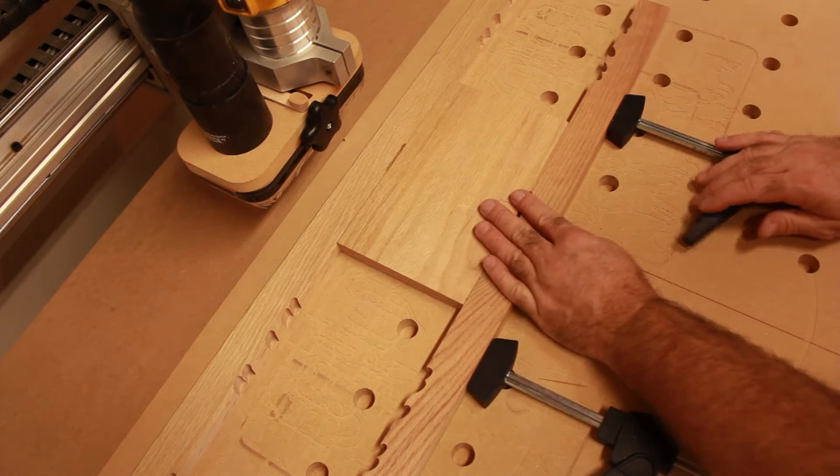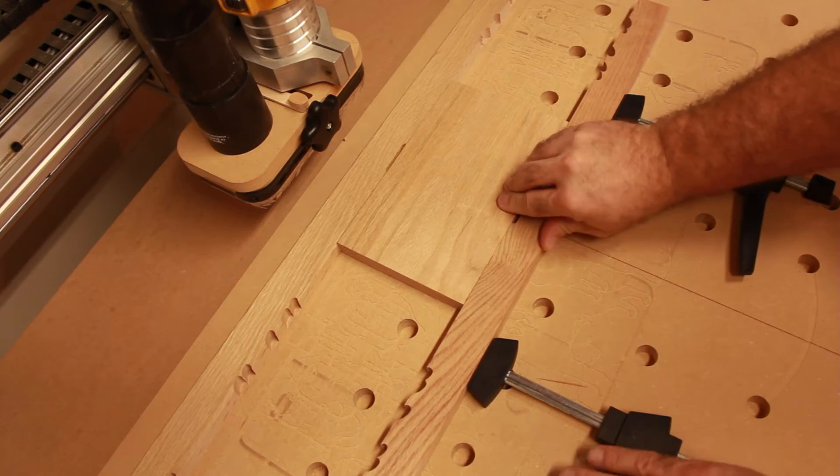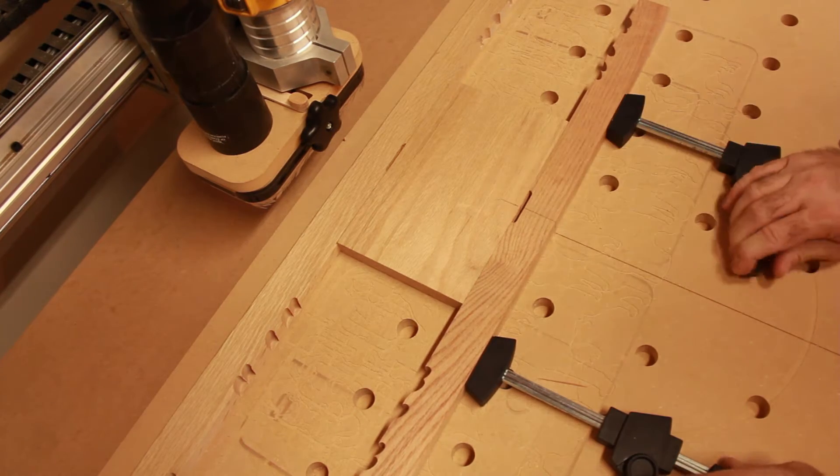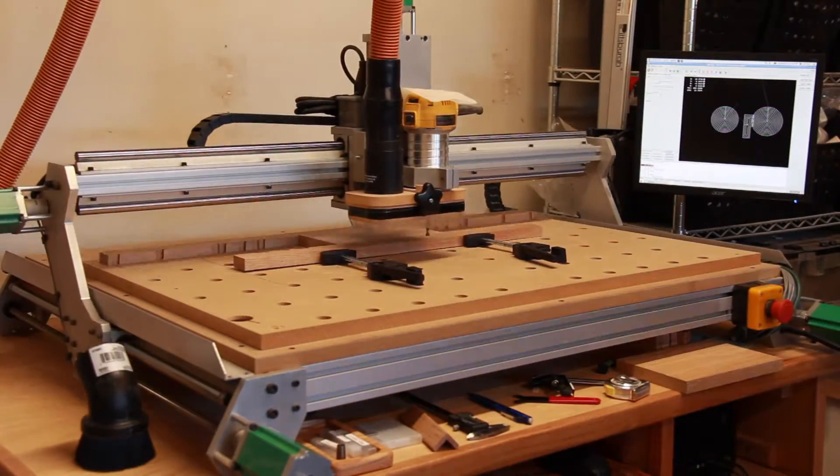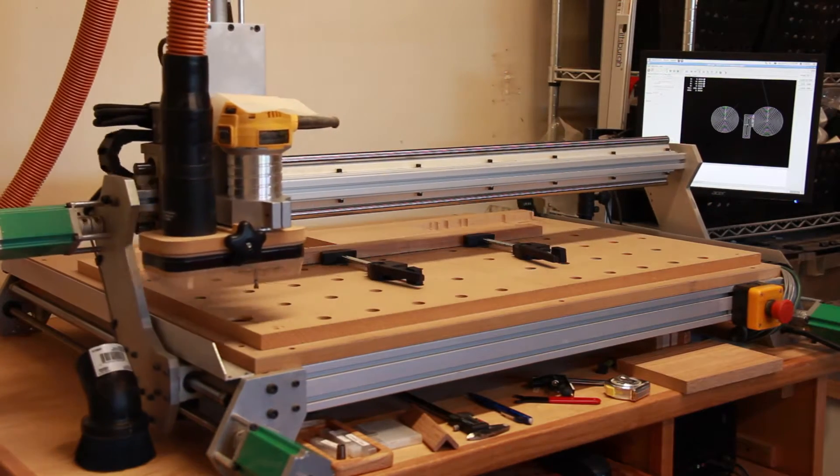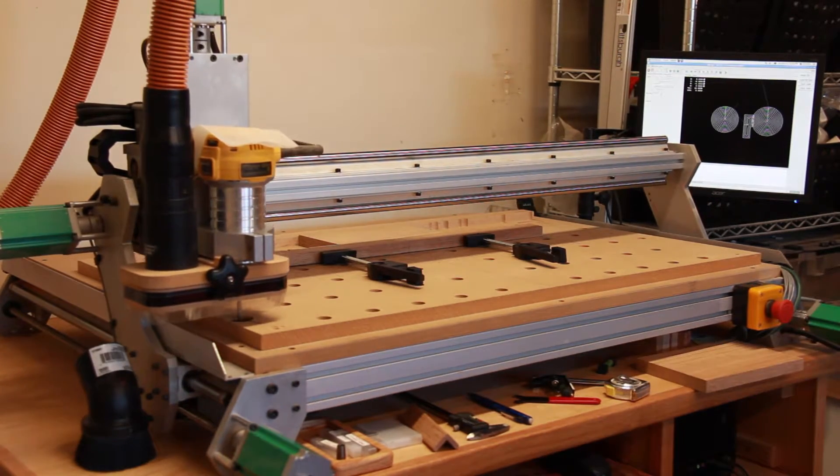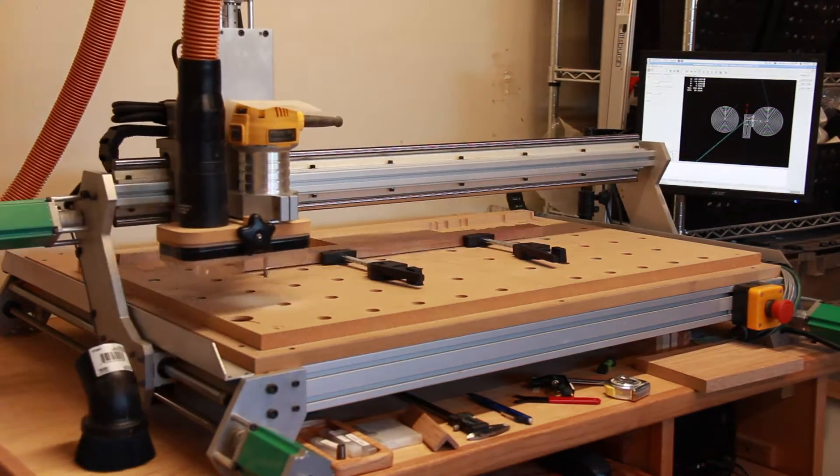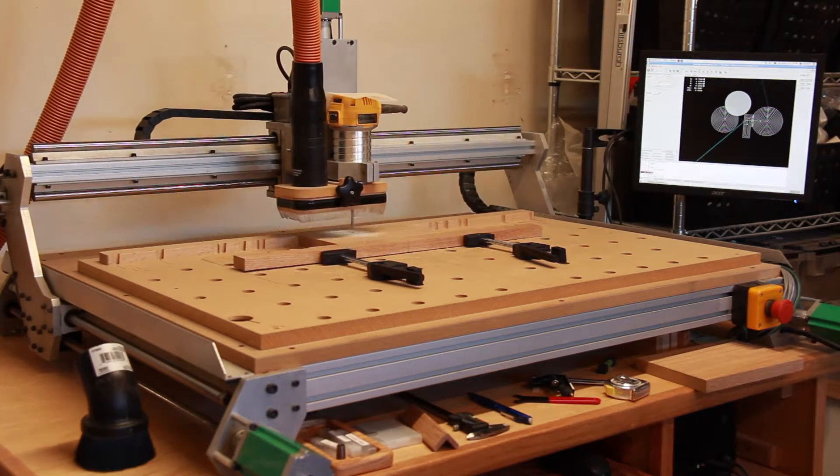I sort of followed that when I got the Probotix Asteroid. One of the first things I did was create a dust shoe, which you can see here attached to the machine. It was a prototype made out of MDF.